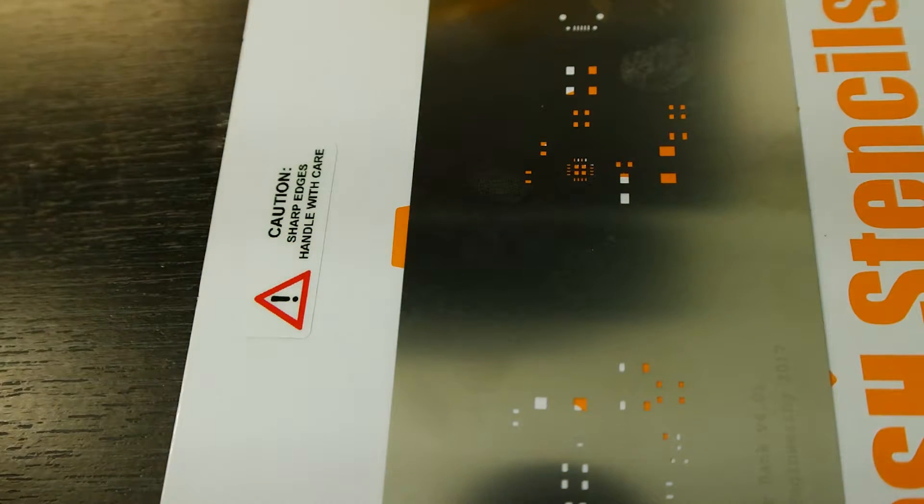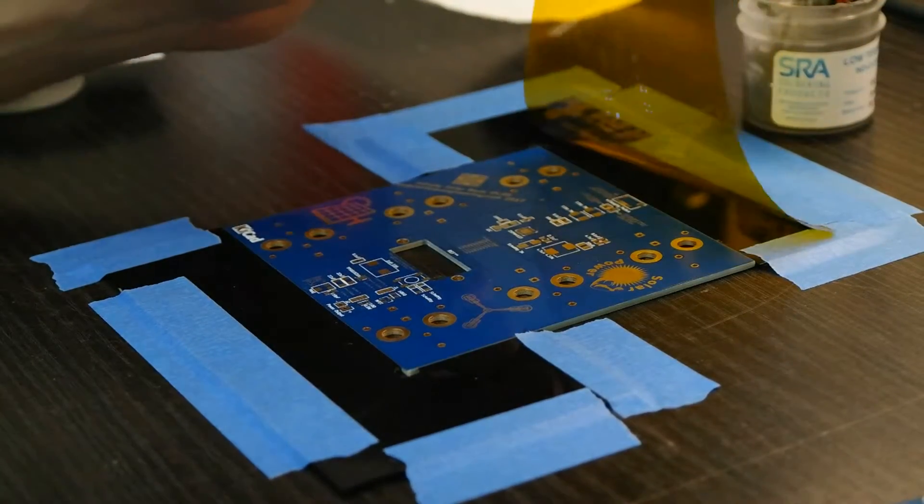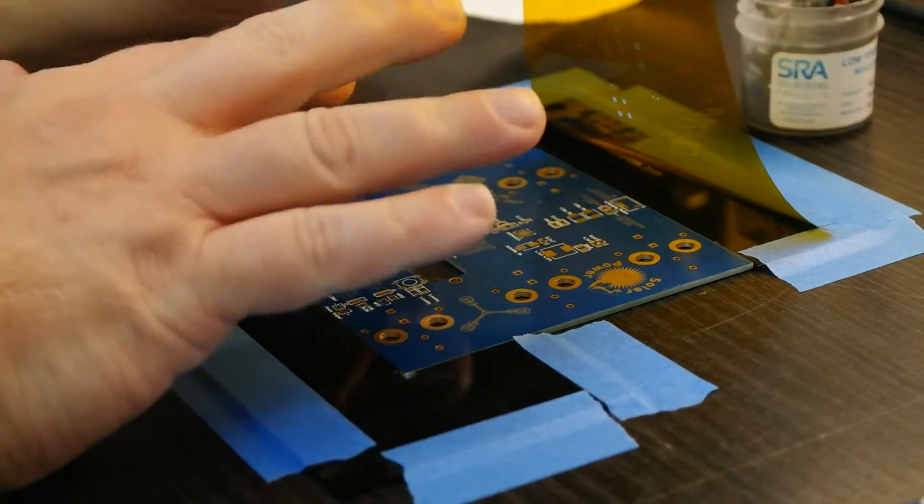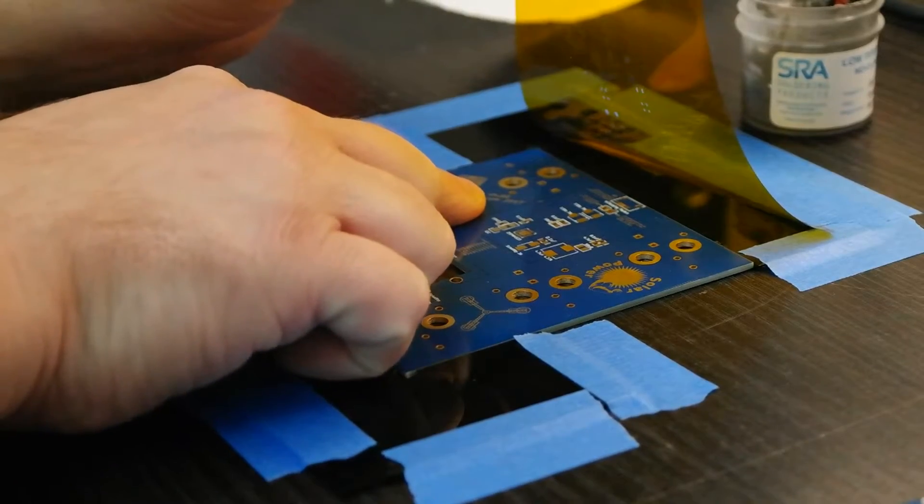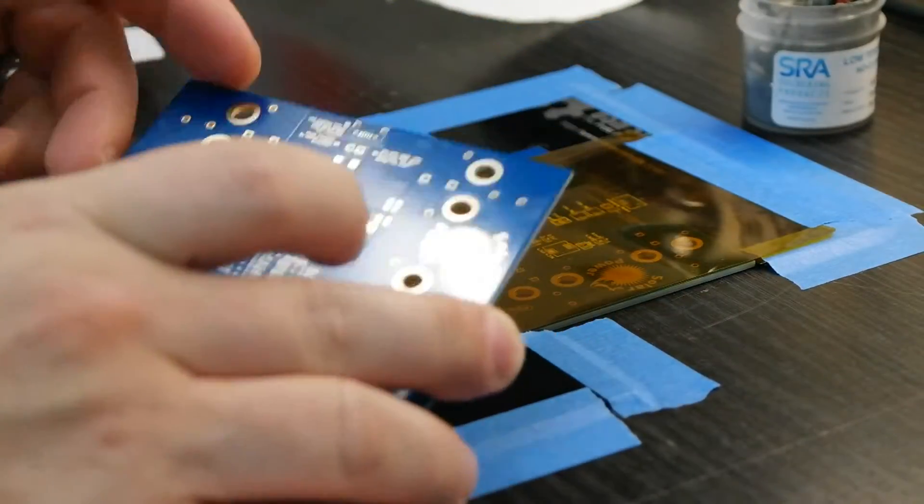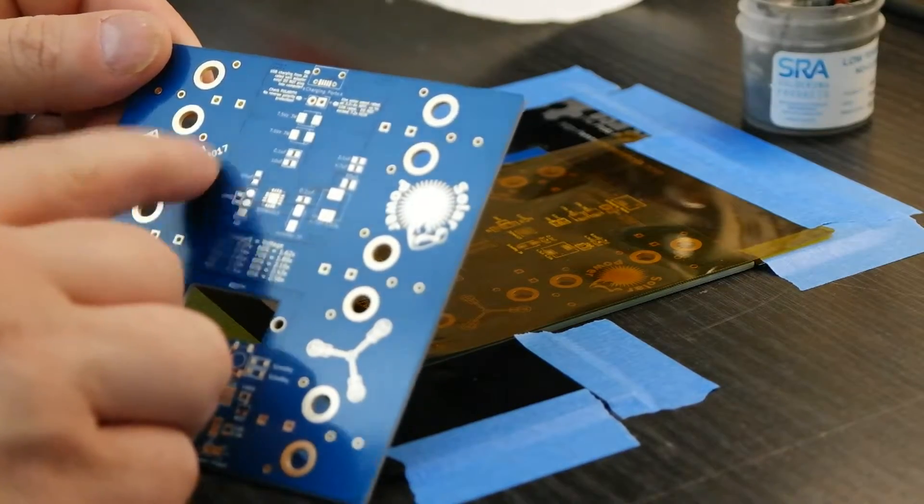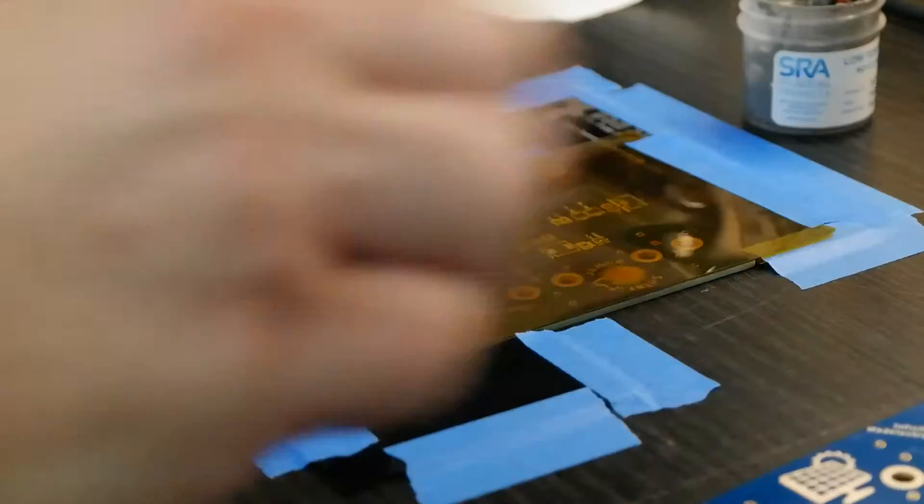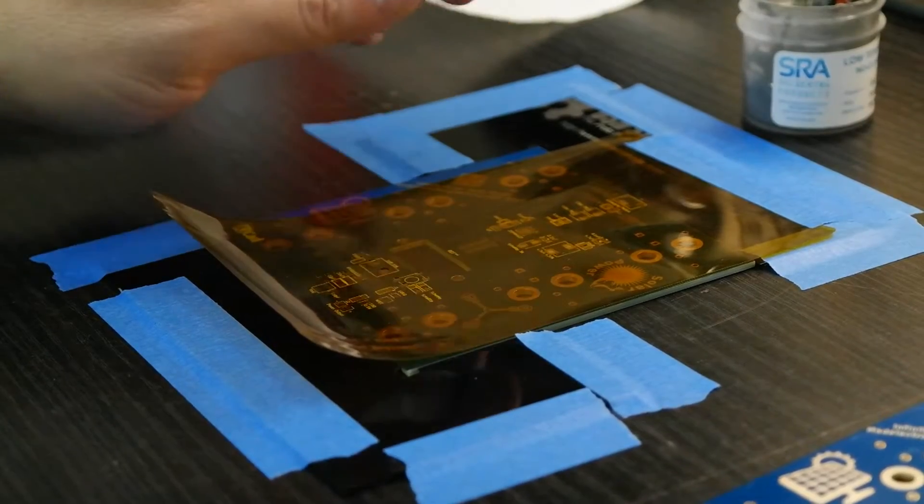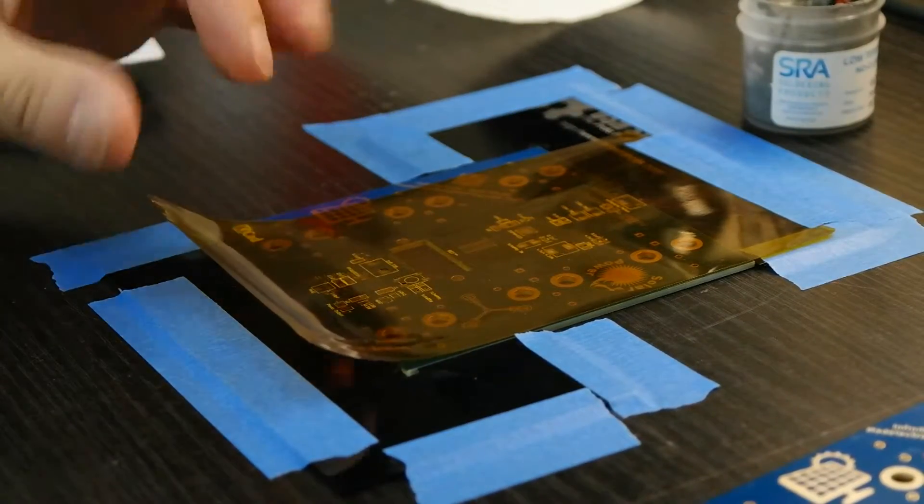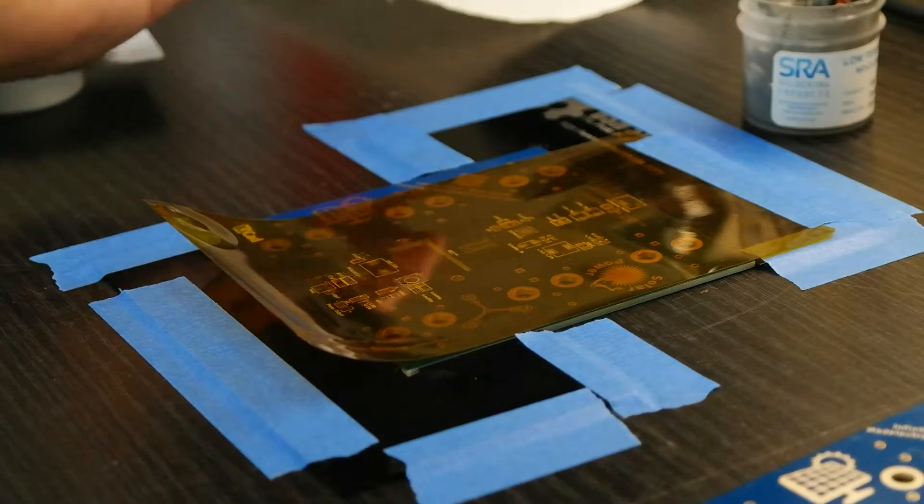So we got two boards here. I got one for my upcoming product version 4.0 and my second board right here which we're going to use on the stainless steel, which is 4.01. That's why we have the difference between the two of them.